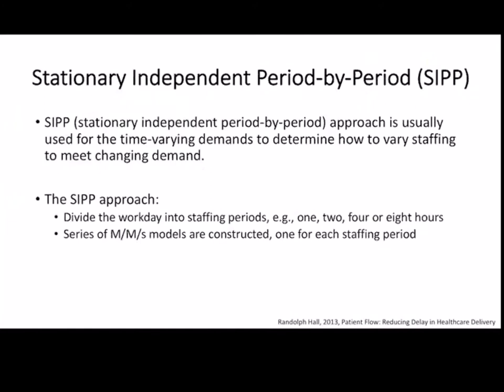When we consider arrival rate versus service rate: service rates don't change significantly over time. A nurse takes about 10 minutes on average to see a patient and check temperature, blood pressure, and so on. A doctor needs about 30 minutes on average to see a patient. Service times are roughly the same at different times of day or different days of the week. However, the arrival rate is going to change. In an outpatient unit, the arrival rate may be higher in the morning, slower in the middle of the day, and higher again in the afternoon and evening.